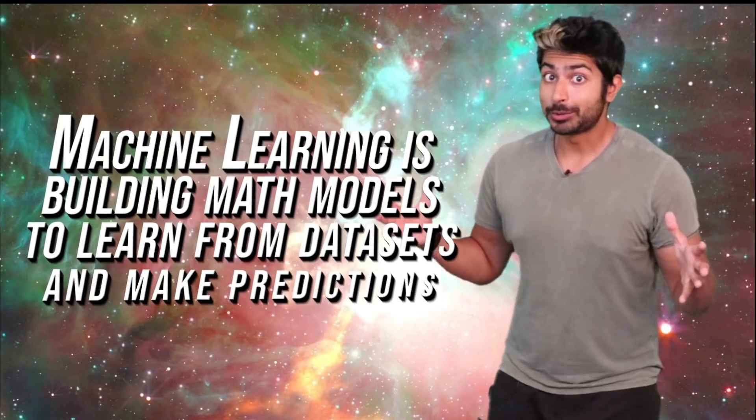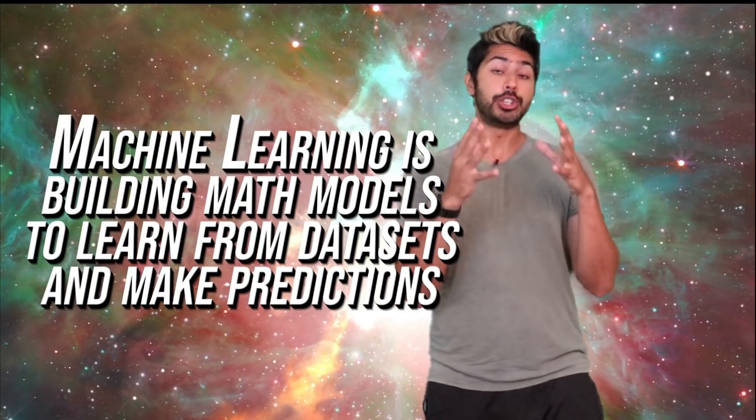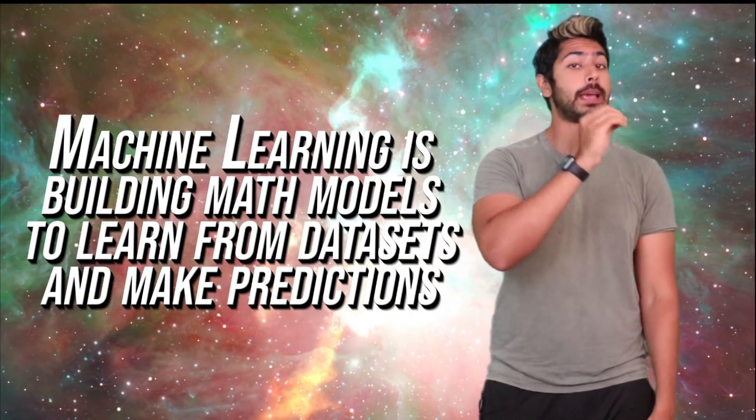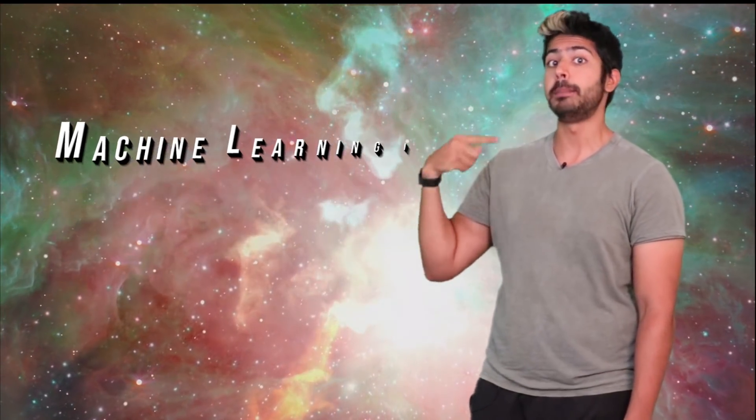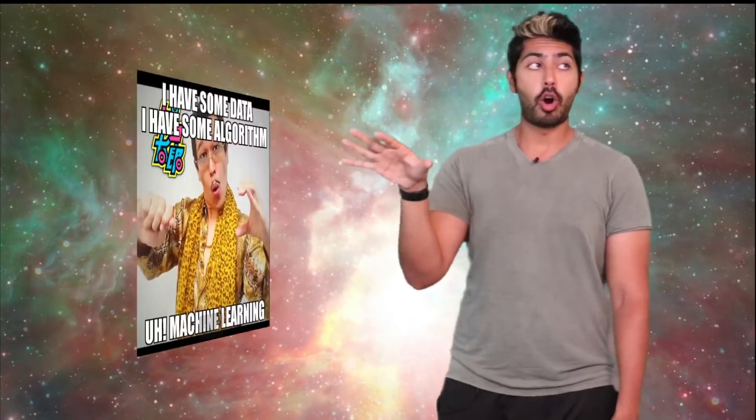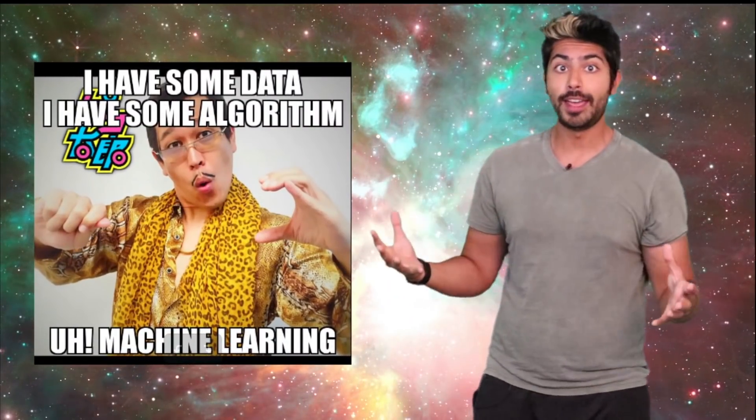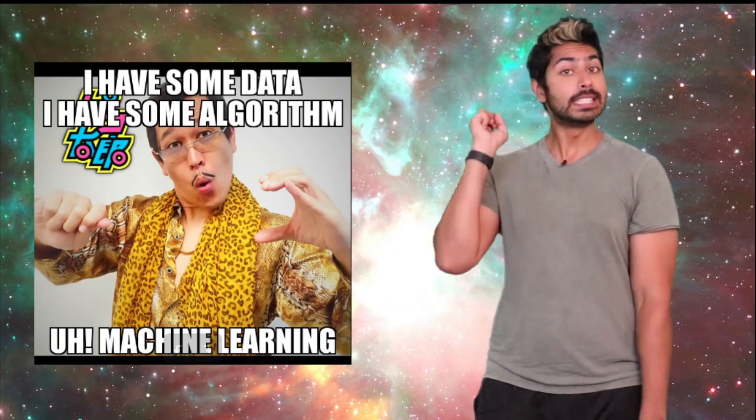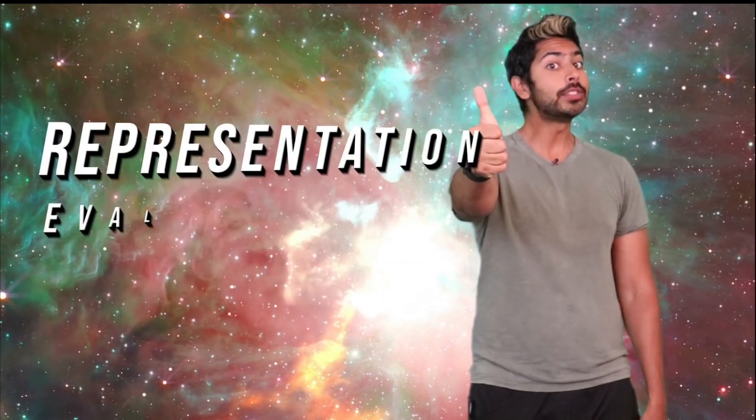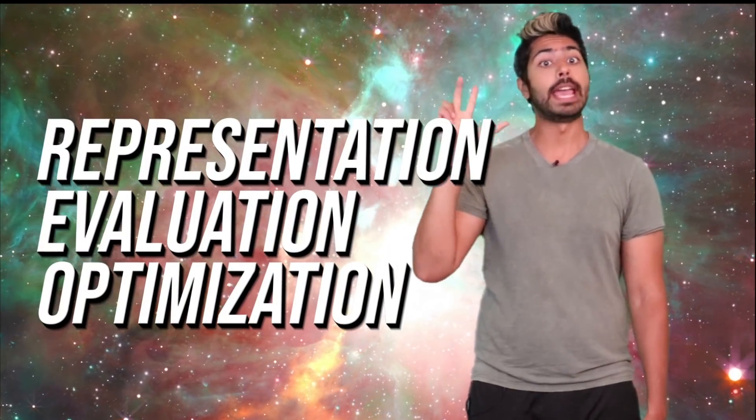So how does all this relate to machine learning? Machine learning is the practice of building mathematical models that will learn from datasets to make predictions. There are so many different ways we can describe this process. One way is to say that it consists of three parts: Representation, evaluation, and optimization.